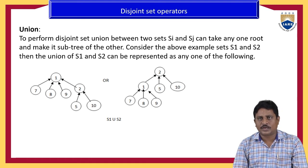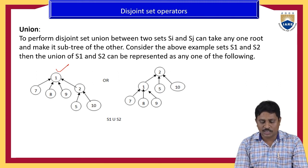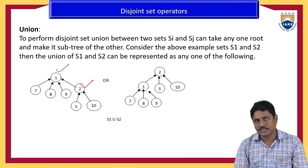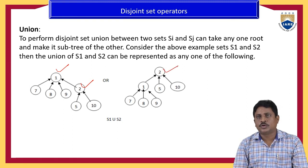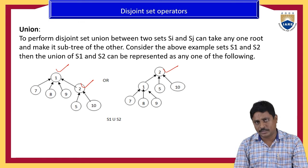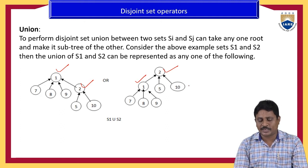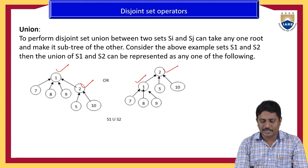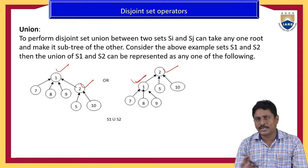For the union operation, we make one set as the parent set of another set. In one case, S1's parent node one is made the parent node of S2's parent node two. Another way is to make two the parent node of one — meaning S2's parent node becomes the parent of S1's parent node. In the union we make S1 the parent of S2, or S2 the parent of S1 — either way is valid.